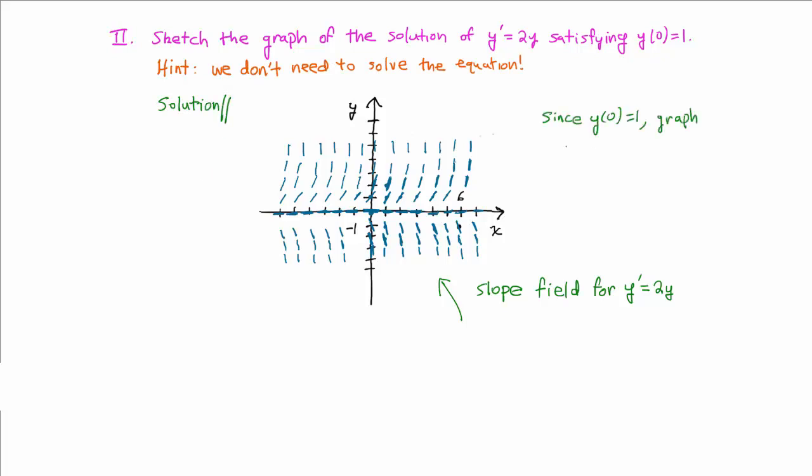Since y of 0 equals 1, we know that the graph of y passes through the point 0, 1, which I'll highlight in the color orange. The slope of the tangent line at that point is indicated by the line segment, and therefore the graph should be increasing there.